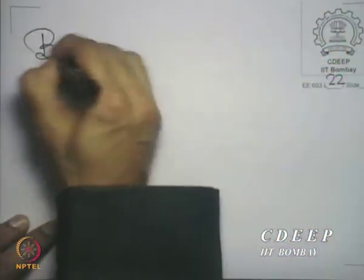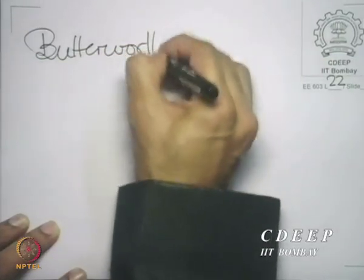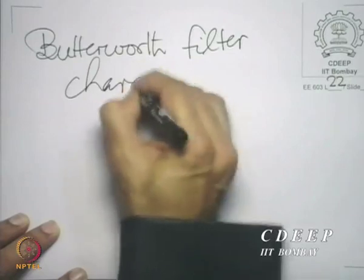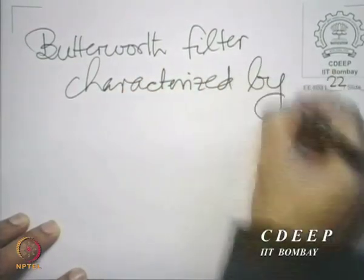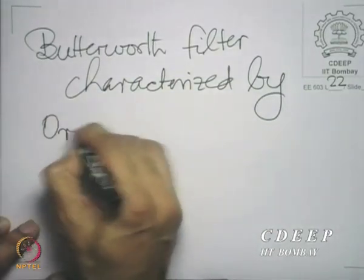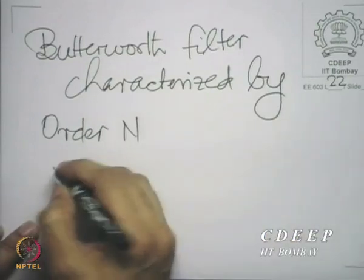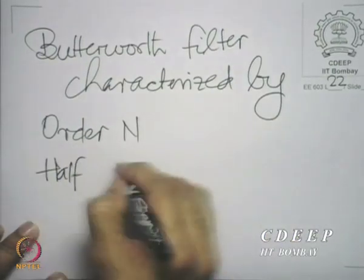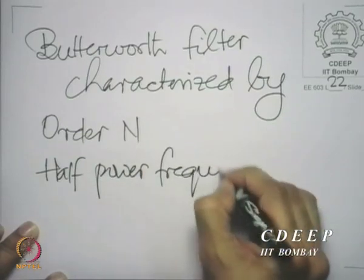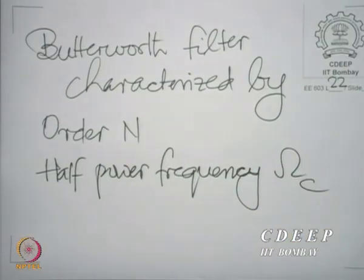In the Butterworth filter design, we identified how to design the two parameters that characterize the Butterworth filter: the order n and what is called the half-power frequency. We have also written down the equations for obtaining the order and the half-power frequency, and both of them have a range associated.